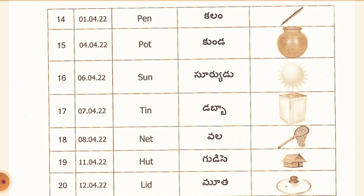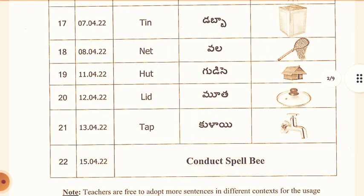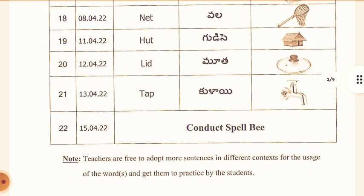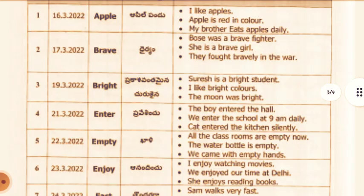11th April: Hut. Telugu meaning: Kudise. 12th April: Lid. Telugu meaning: Mota. 13th April: Tap. Telugu meaning: Kolai. On 15th April, we should conduct a Spellby test. These are the words for 1st and 2nd classes.